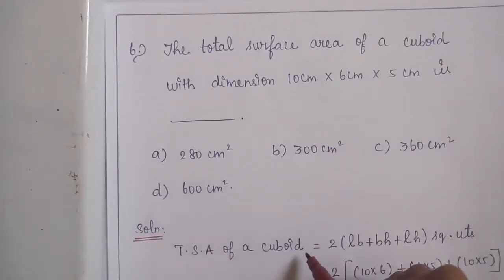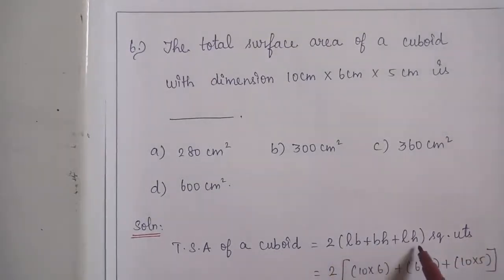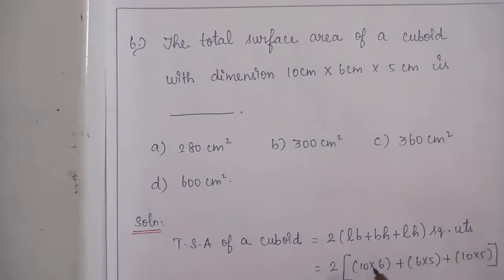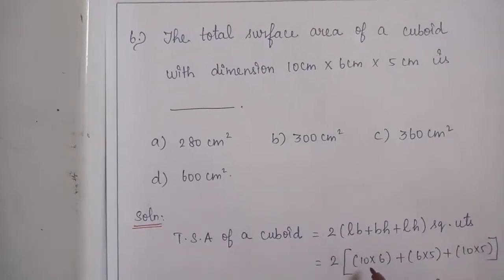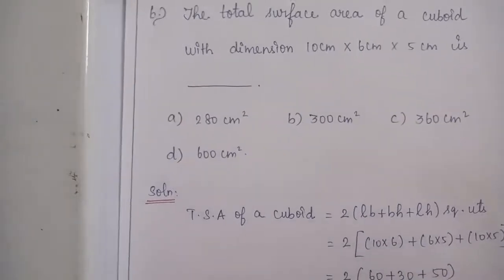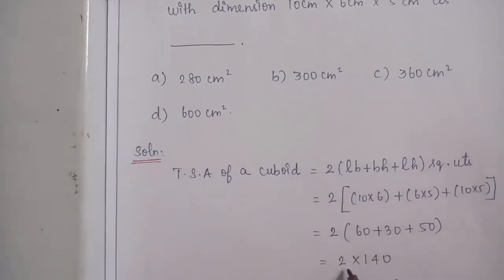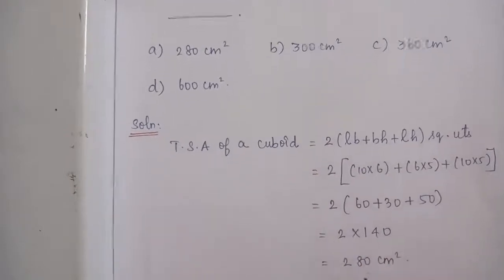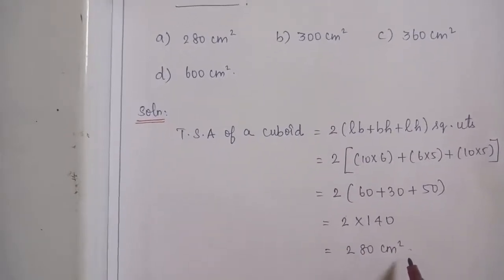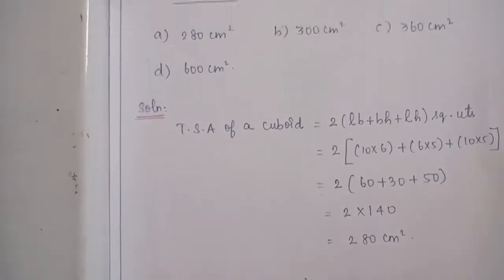Solution: TSA of a cuboid equals 2(LB + BH + LH) square units. Which equals 2 into (10×6 + 6×5 + 10×5), which equals 2 into (60 + 30 + 50), which equals 2 into 140, equal to 280 cm square. The correct answer is Option A: 280 cm square.